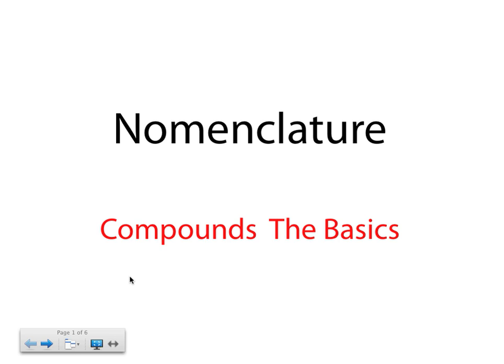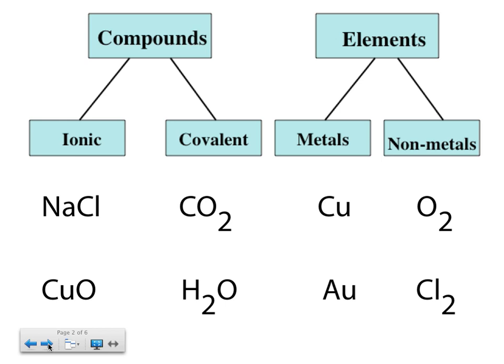One of the things you need to do when you look at a formula is you need to ask yourself: am I looking at a compound or am I looking at an element? If you're looking at an element, it only has one type of atom in it. For example, in this formula, you have Cu written by itself, so that tells you you just have copper atoms bonded together.